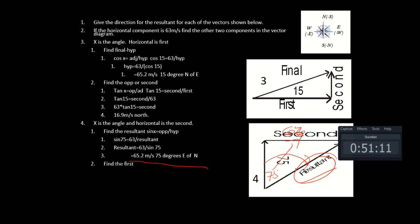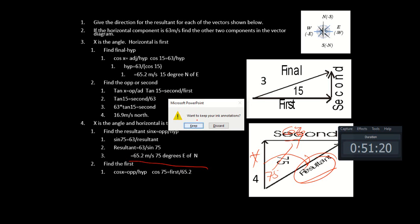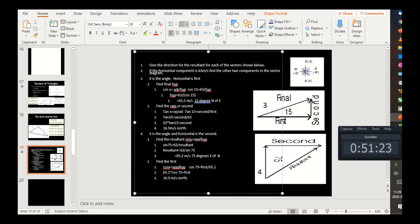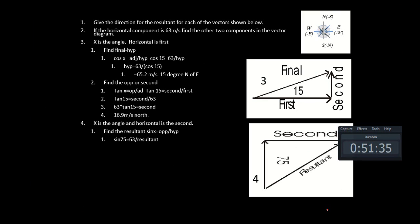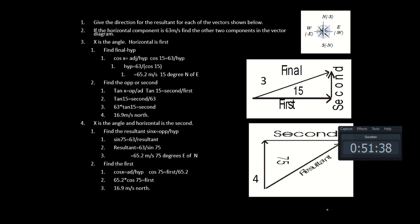Now find the first component — we're going to switch to cosine. Cosine is adjacent over hypotenuse, not opposite. So we continue: 65.3 times cosine gives us 16.9 meters per second north. Simple enough.